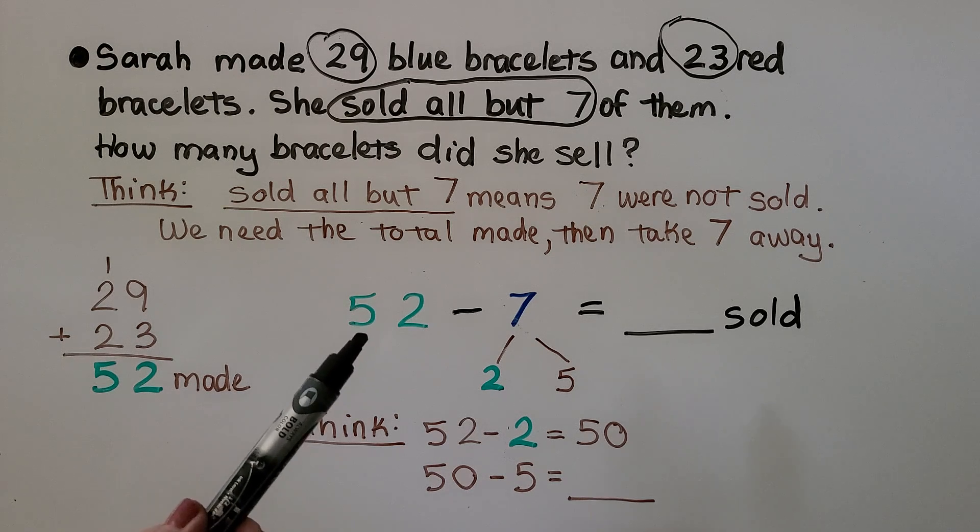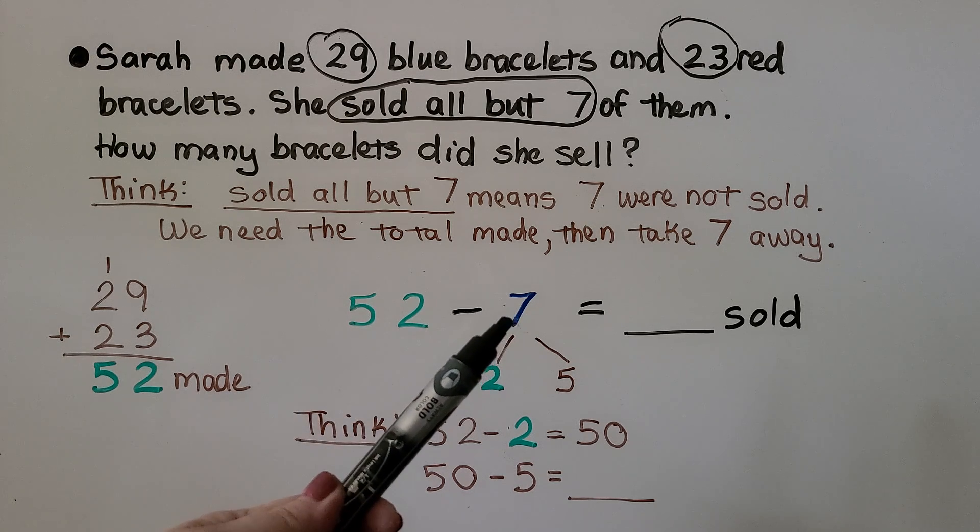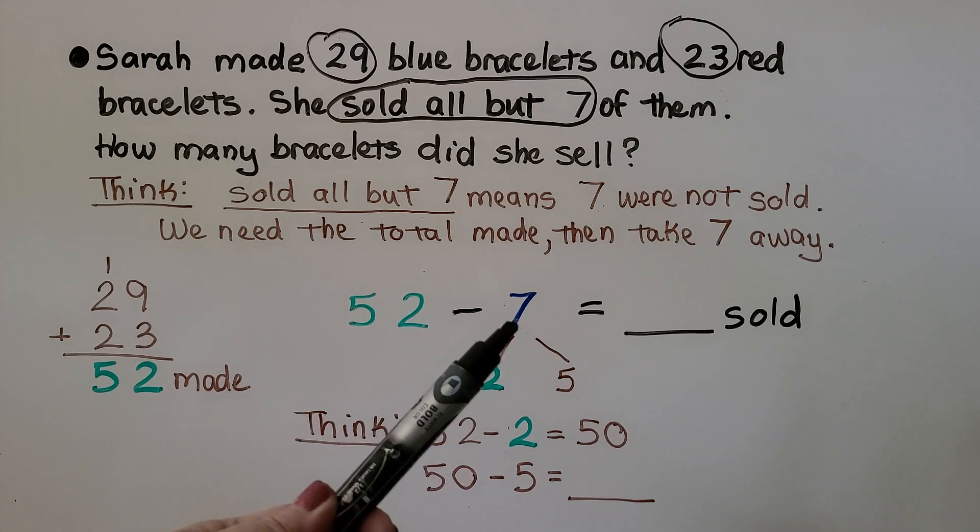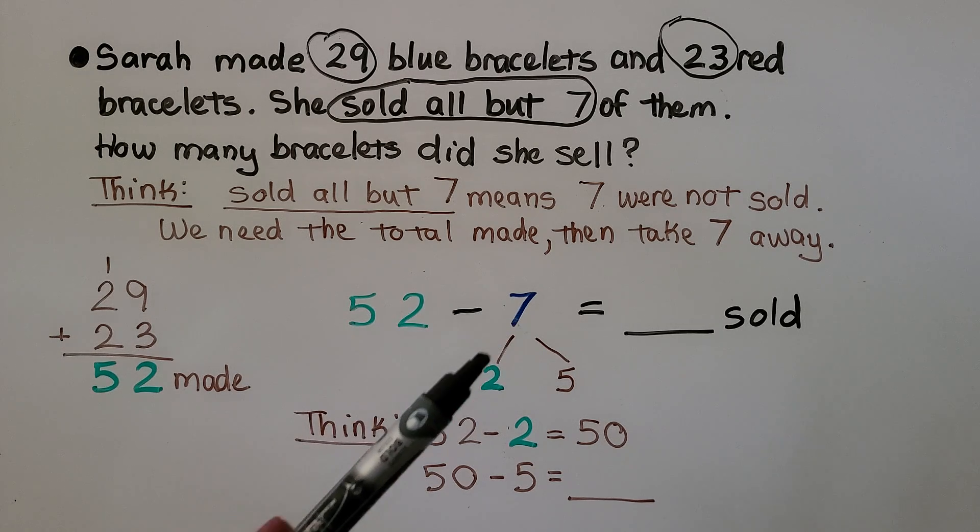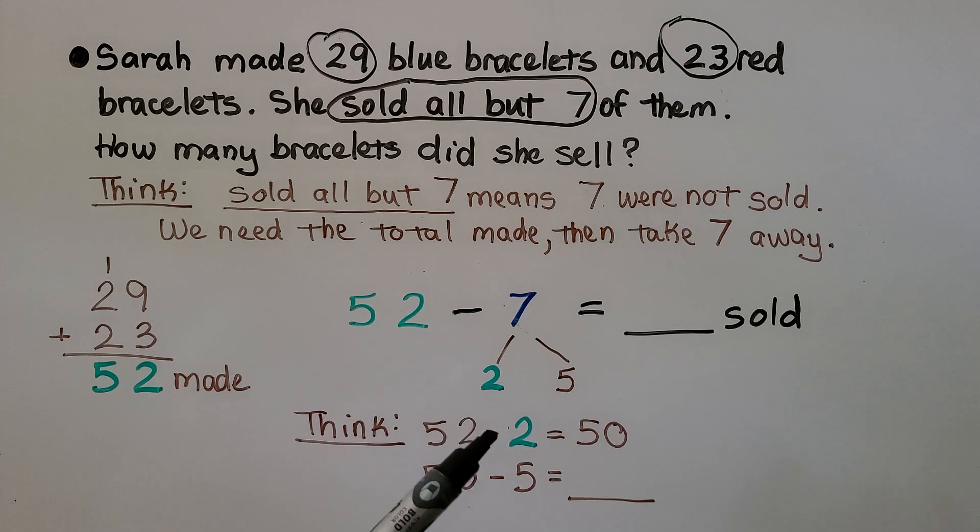Now we need to do 52 minus the 7 that were not sold to know how many she sold. Because there's a 2 here, we can break apart the 7 as 2 and 5, then do 52 minus 2, using mental math to get to 50, a nice tens number.